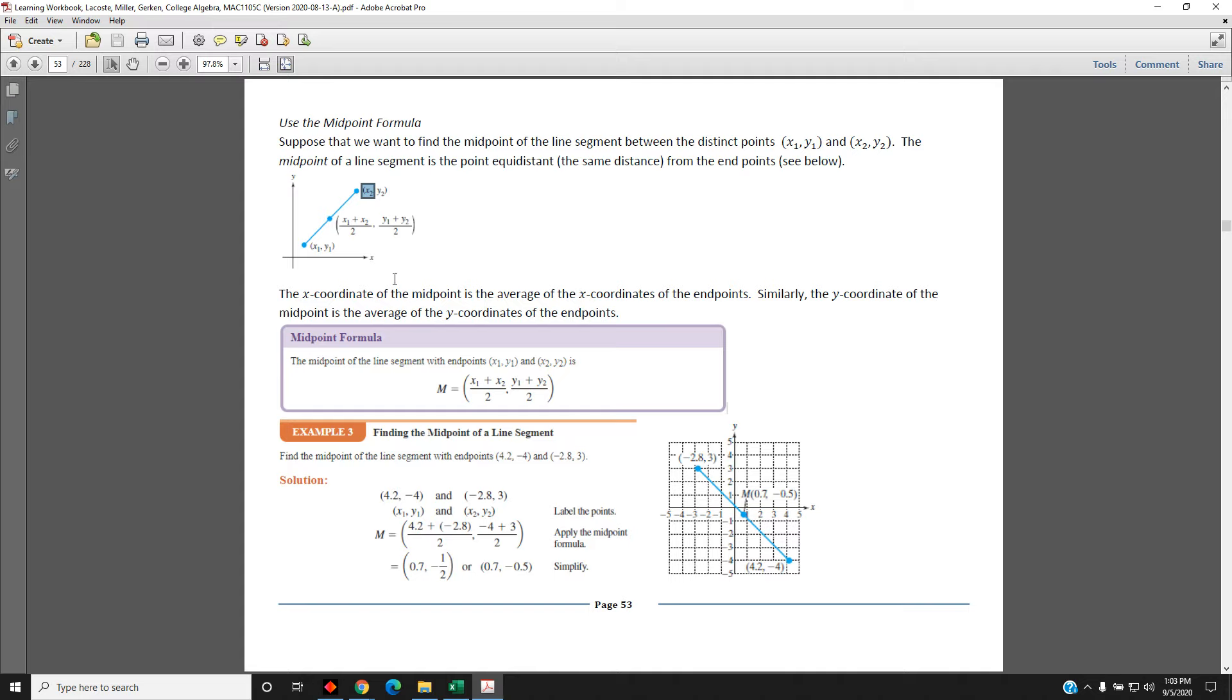Similarly, the y-coordinate of the midpoint is the average of the y-coordinates of the endpoints. y1 plus y2 divided by two because there are two endpoints.